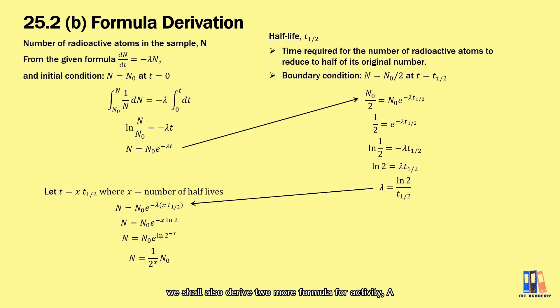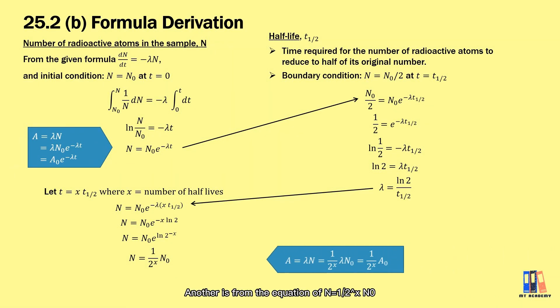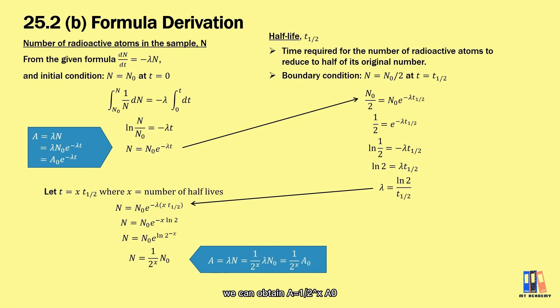Besides this formula, we should also derive two more formulas for activity. From the formula N = N₀e^(-λt), we can obtain also similar equations that A = A₀e^(-λt). Another is from the equation N = ½^x N₀, we can obtain A = ½^x A₀.